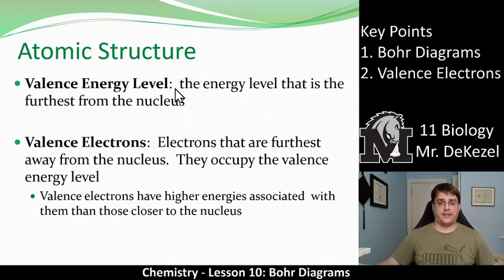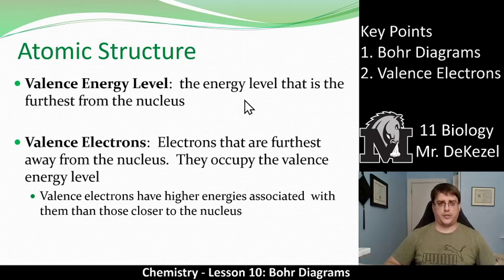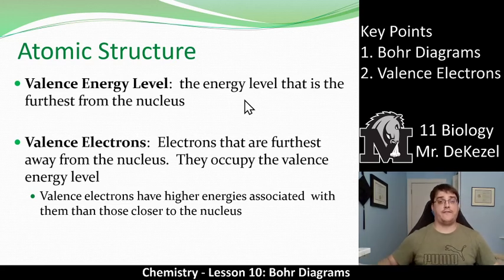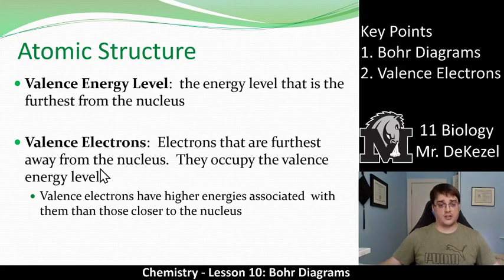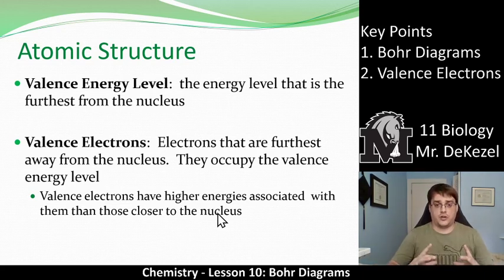Valence electrons and valence energy levels — that's key point two. The valence energy level is the energy level furthest from the nucleus that has electrons in it. If we have 10 electrons in a particular atom, the first level can only hold two, so you have to move out to the next energy level. That outer occupied energy level is called the valence energy level, and the electrons in that outer shell are called the valence electrons. Valence electrons have higher energies than those closer to the nucleus — energy increases as you move away toward the valence electrons.